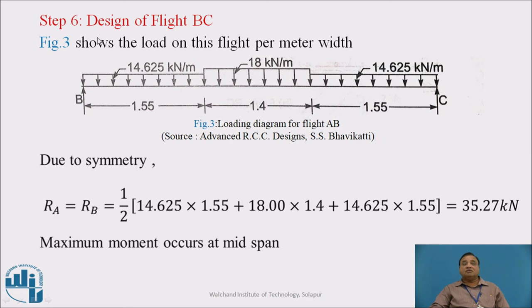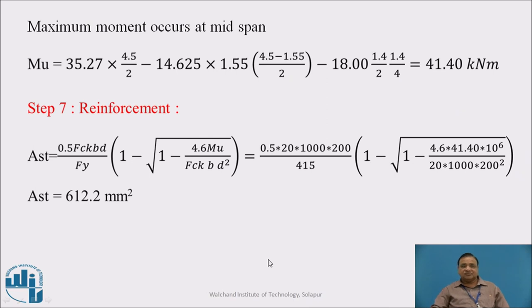Step 6: Design for flight BC. Flight BC loading is different from flight AB, therefore we design them separately. For flight BC, the loading diagram is shown here. This is landing portion with lesser load, going portion with more load, and again landing portion with lesser load. Due to symmetry, the bending moment will be at mid span. Therefore we calculate RA and RB reaction. Maximum bending moment is at mid span and works out to be 41.4 kilonewton meter.